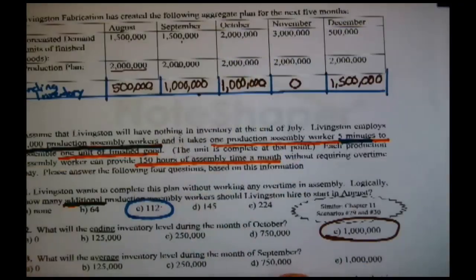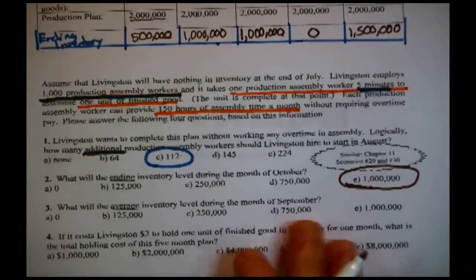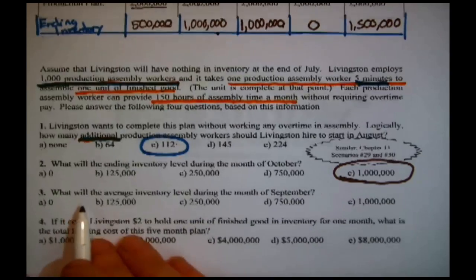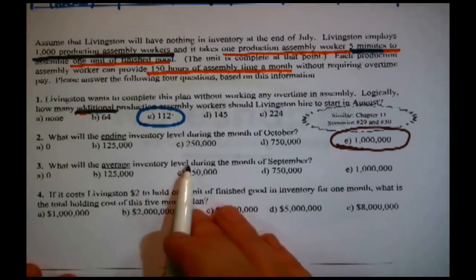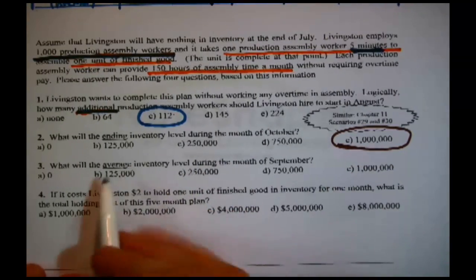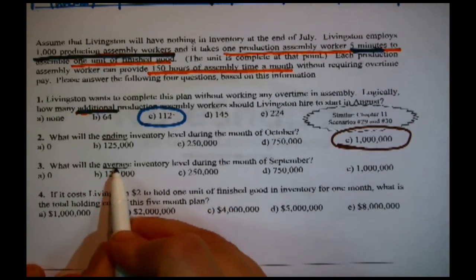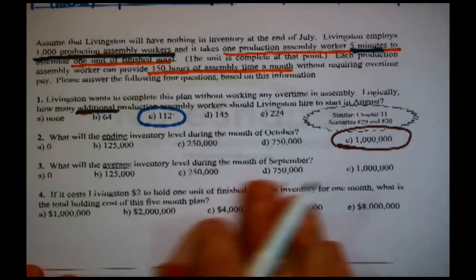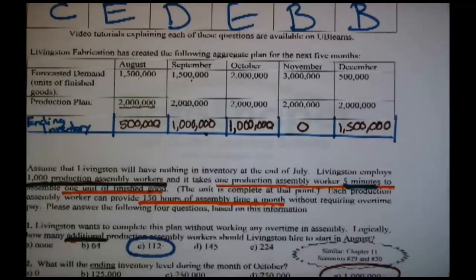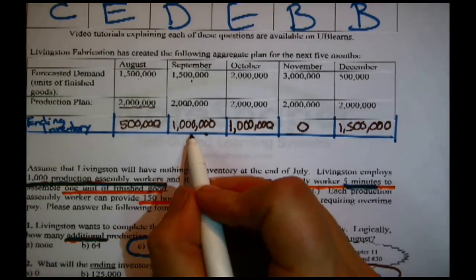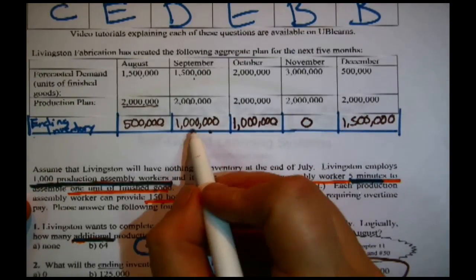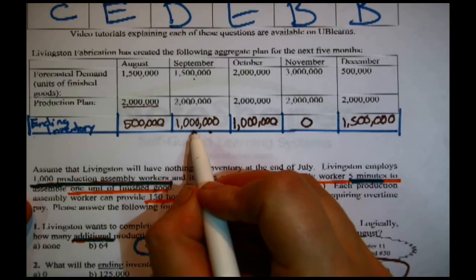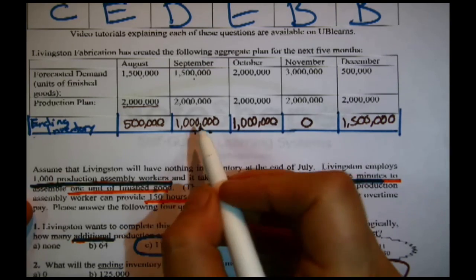What will be the ending inventory level during the month of October? I just look it up — October ending inventory is 1,000,000. That's the answer.